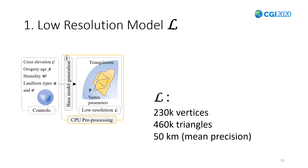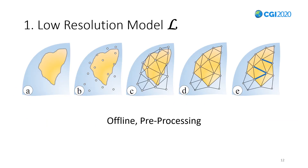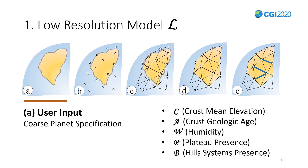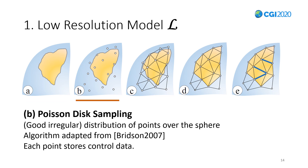We construct a low-resolution triangulation of precision 50 km. There are five steps involved. The first is capturing user input as control maps, defining parameters like crust elevation, age, humidity, and extra features like plateaus and hill systems. The next step is sampling the control maps: we create a distribution of points over the sphere and store the control data in it using Poisson-disk sampling, a good way to produce an irregular distribution of points.